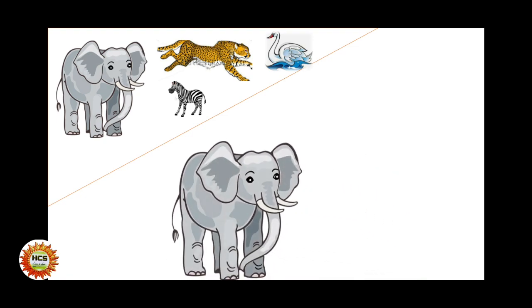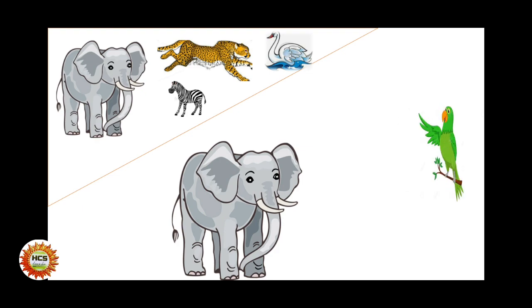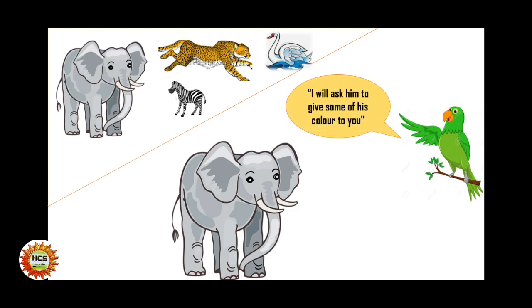The elephant said to his friend the parrot that he was all grey and had only one color, and he did not like his color. So the parrot said, don't be sad. The parrot stretched its right wing and put it on Raja's huge ear. She said, don't be sad — the cheetah is my friend. I will ask him to give some of his color to you.